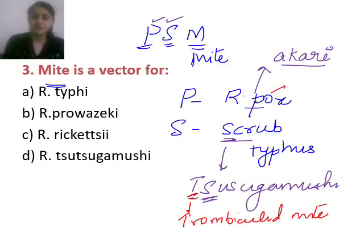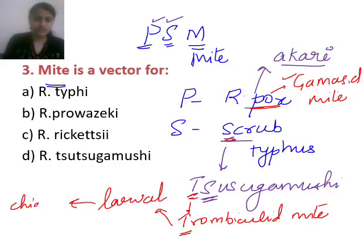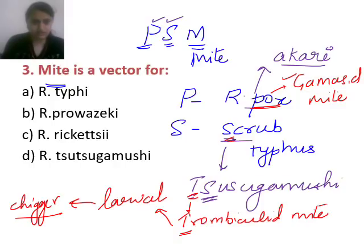Rickettsialpox is caused by the gamasid mite. So if you get a specific exam question: gamasid mite causes Rickettsialpox, trombiculid mite causes scrub typhus. The larval stage of trombiculid mite is called the chigger, so scrub typhus is also called chigger-borne disease. Coming back to the question — mite is a vector for Orientia tsutsugamushi, which causes scrub typhus.